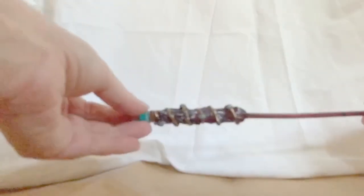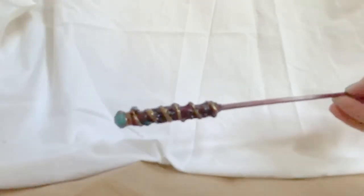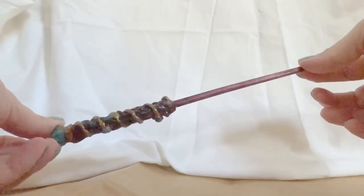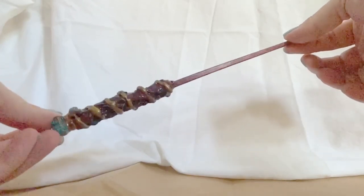The final step to making your wand is to add a clear coat paint or a layer of Mod Podge to make your wand glossy. And then your wand is done. Remember if you make a wand let us know how it turns out.